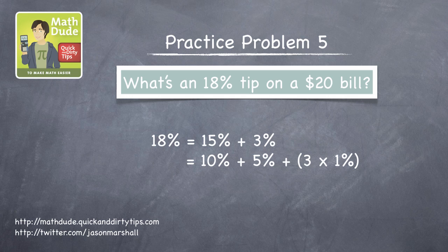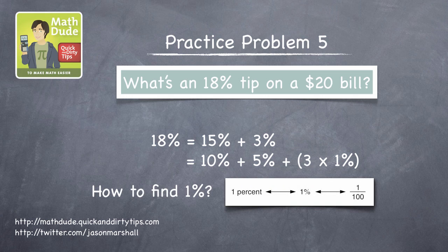Well, notice that 18% is just 15% plus 3 times 1%. And finding 1% is no harder than finding 10%. Just divide the total amount, $20 here, by 100 instead of 10.